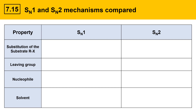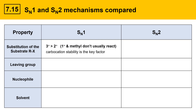On the top I've got property, how it relates to SN1, how it relates to SN2, and then the various important factors. First we'll take a look at the substitution of the substrate alkyl halide, RX. In the SN1 mechanism, the order of reactivity is tertiary is more reactive than secondary, which is so much more reactive than primary and methyl that these substrates usually don't react.